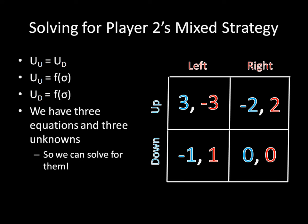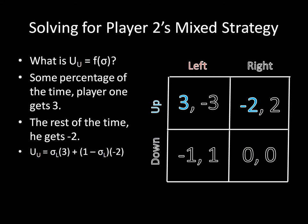So you will recall we want to find the probability distribution that makes player one indifferent between his pure strategies. And we do that by expressing player one's utility for playing up as some function of playing left, which we express as sigma l. So he'll get three points some of the time and negative two points the rest of the time.